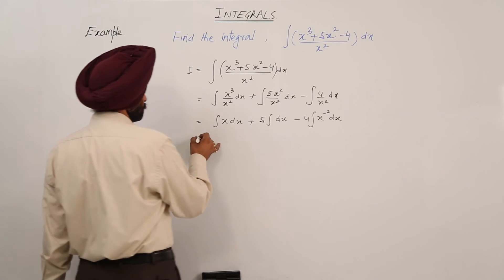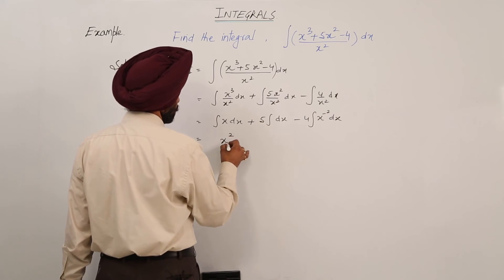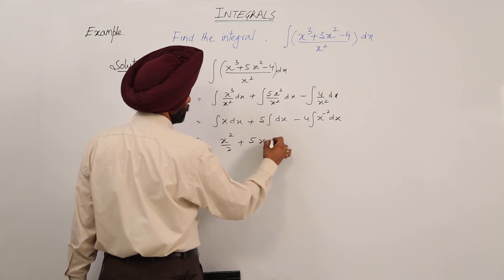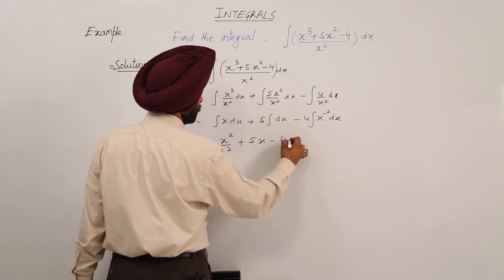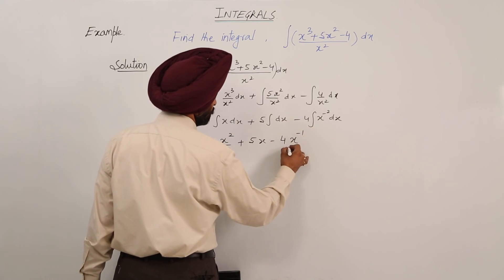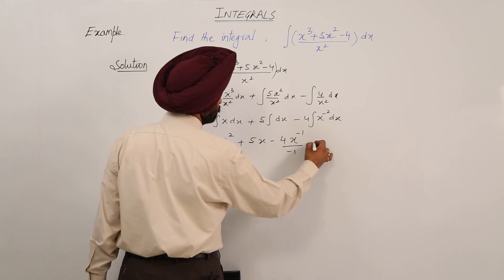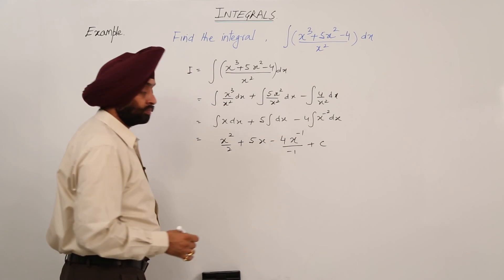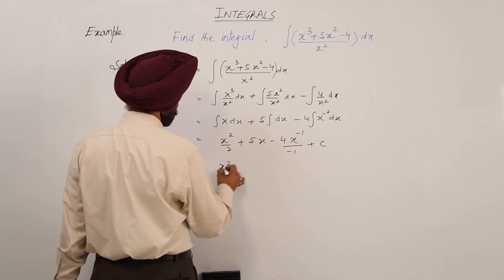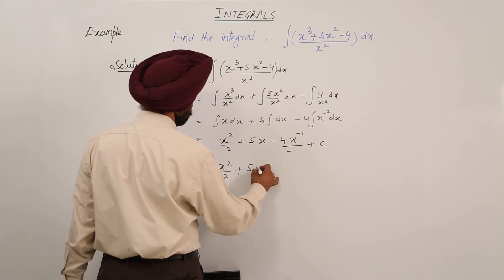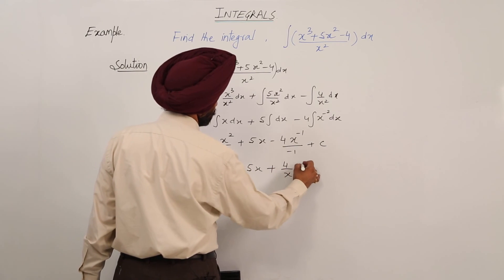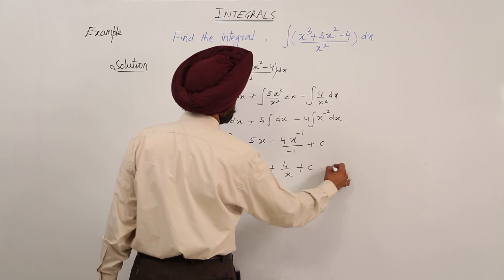Now this becomes x square upon 2 plus 5x minus 4x raise to power minus 1 upon minus 1 plus c. And finally, x square upon 2 plus 5x plus 4 upon x plus c. This is the answer.